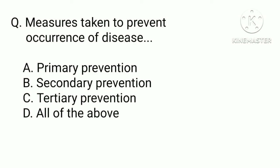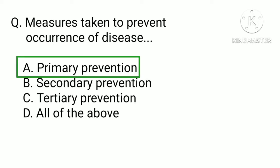Measures taken to prevent the occurrence of disease are: a) primary prevention, b) secondary prevention, c) tertiary prevention, or d) all of the above. The correct answer is a) primary prevention.